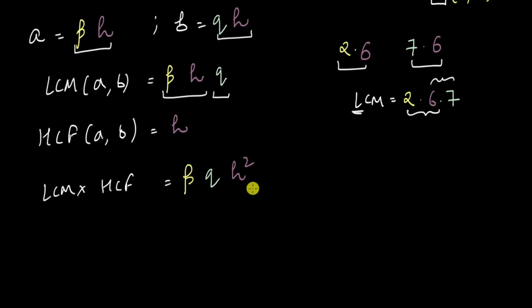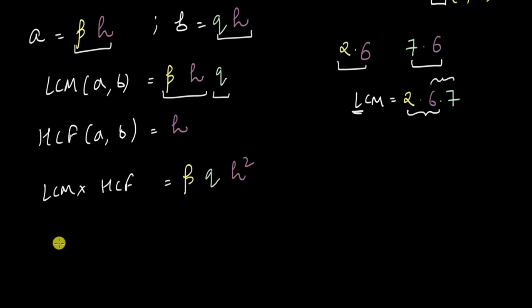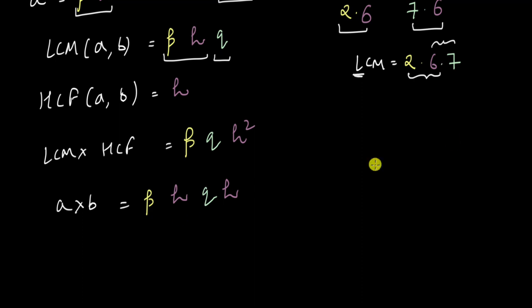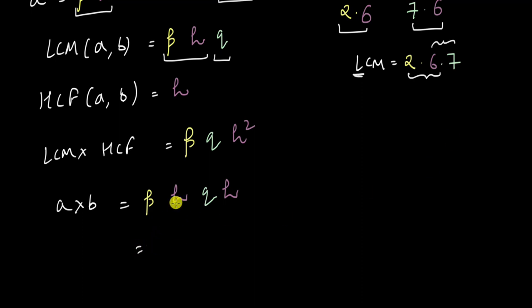And what about our two numbers A and B. What do we get when we multiply them? A times B. A is P into H. So P into H and B is Q times H. So this will be Q times H. But the product of these two will be P Q H square, the same.